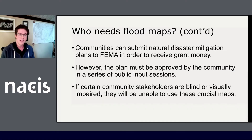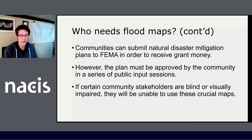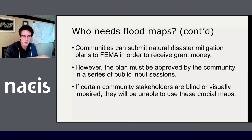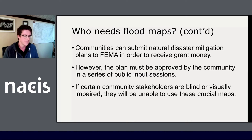When communities create plans to respond to natural disasters, they use the FIRMs and put together the plan, send it off to FEMA. FEMA gives them grant money in order to actually implement these plans. The highest level people working on these plans are hydrologists and GIS people — the expert types. But a required portion of this process is that the plan has to go through a public input process, and there is a possibility that people involved could be blind or visually impaired or represent people who are. In any case, these maps need to be accessible to people who might not be able to see visual maps, or else they can't really be involved in the process at all.